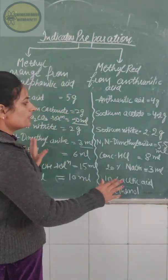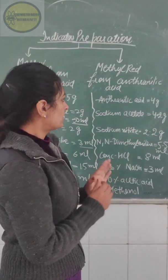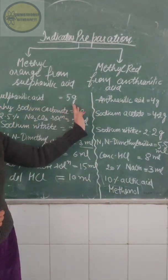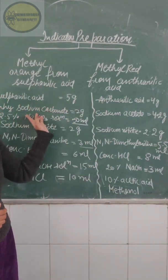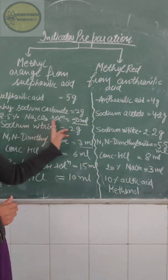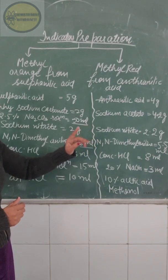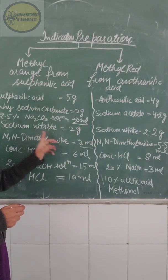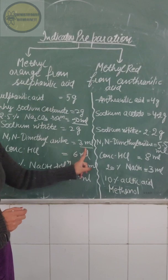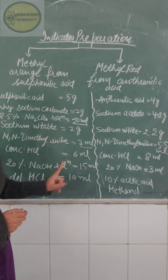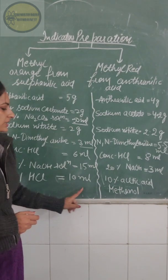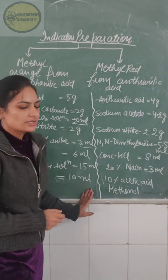These are the basic chemical requirements for these preparations. For methyl orange: sulfanilic acid 5 g, sodium bicarbonate 2 g, 2.5% sodium carbonate solution 50 ml, sodium nitrite 2 g, dimethylaniline 3 ml, concentrated HCl 6 ml, 20% NaOH solution 15 ml, and dilute HCl 10 ml.